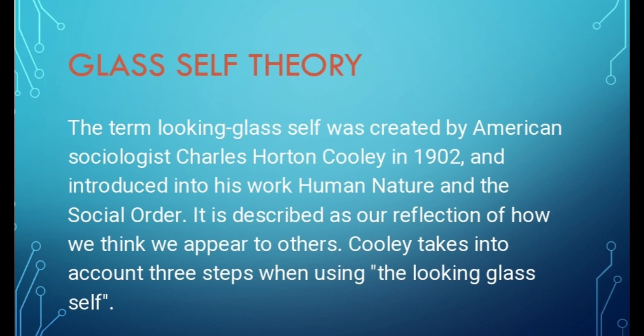کہ ہم کیا سوچتے ہیں کہ ہم دوسروں کو کس طرح کے نظر آ رہے ہیں۔ Cooley نامی sociologist نے 1902 میں اپنی یہ تھیری پیش کی تھی جس میں وہ یہ بتانا چاہ رہے ہیں کہ دوسرے ہمیں کس آنکھ سے دیکھ رہے ہیں۔